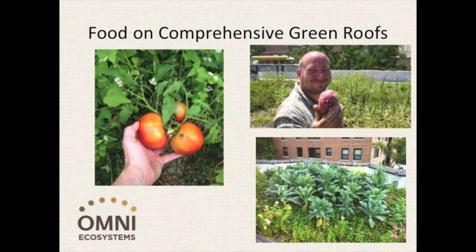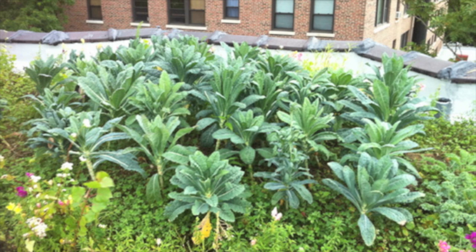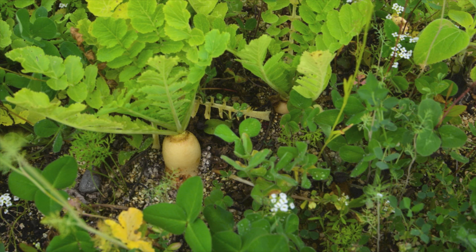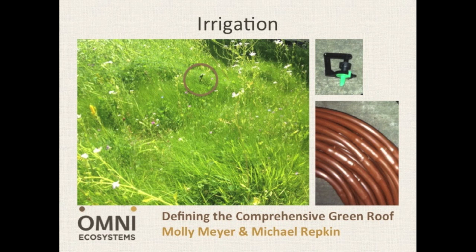In systems that weigh 36 pounds per square foot or less, we have grown leafy greens like kale, lettuces, and herbs, as well as corn, potatoes, strawberries, rhubarb, radishes, carrots, and many more foods. This variety is not seen in extensive or semi-intensive systems and weights. Comprehensive green roofs require irrigation systems. Irrigation is commonly used on intensive green roofs, as well as some semi-intensive green roofs, but is rarely seen on extensive green roofs.